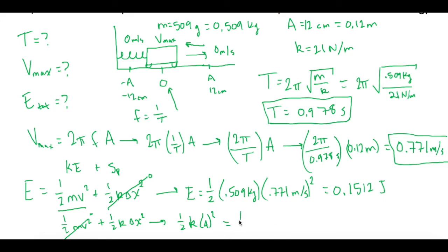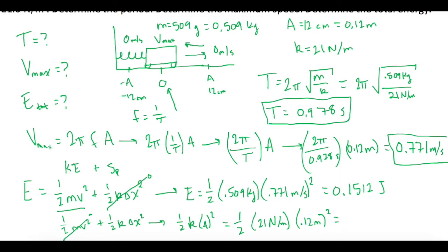So if I do that, I get one half times the k of 21 newtons per meter times the amplitude of 12 centimeters, or 0.12 meters squared. This gives us 0.1512 joules. So what we just showed is that all of our energy is going back and forth from kinetic energy to spring potential energy. So the answer to part C, the total energy of the system is 0.1512 joules.